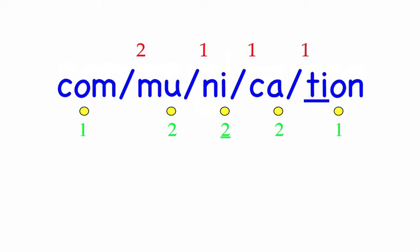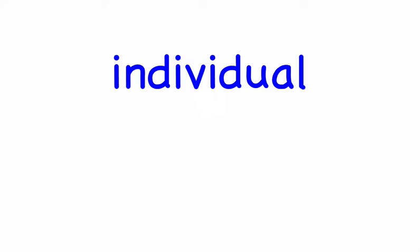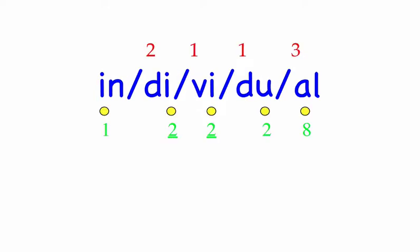Individual. Each individual is responsible for his own actions. This is a five-syllable word. First syllable: In, two sounds, I-N. Di, two sounds, D-I. Vi, two sounds, V-I. Du, two sounds, D-U. All, two sounds. In-di-vi-du-all. Mark the word. Individual.